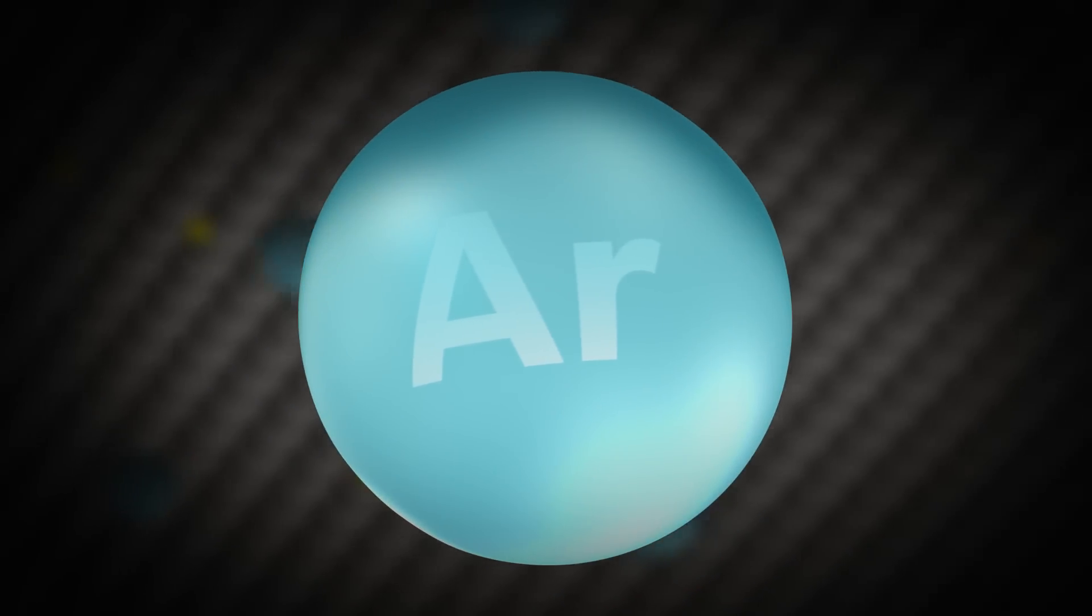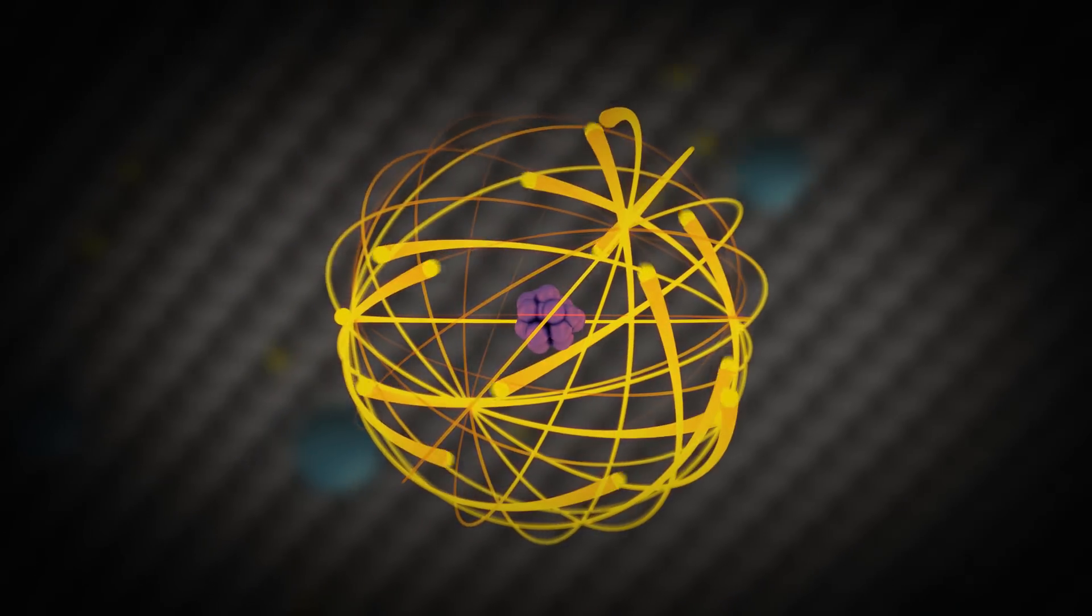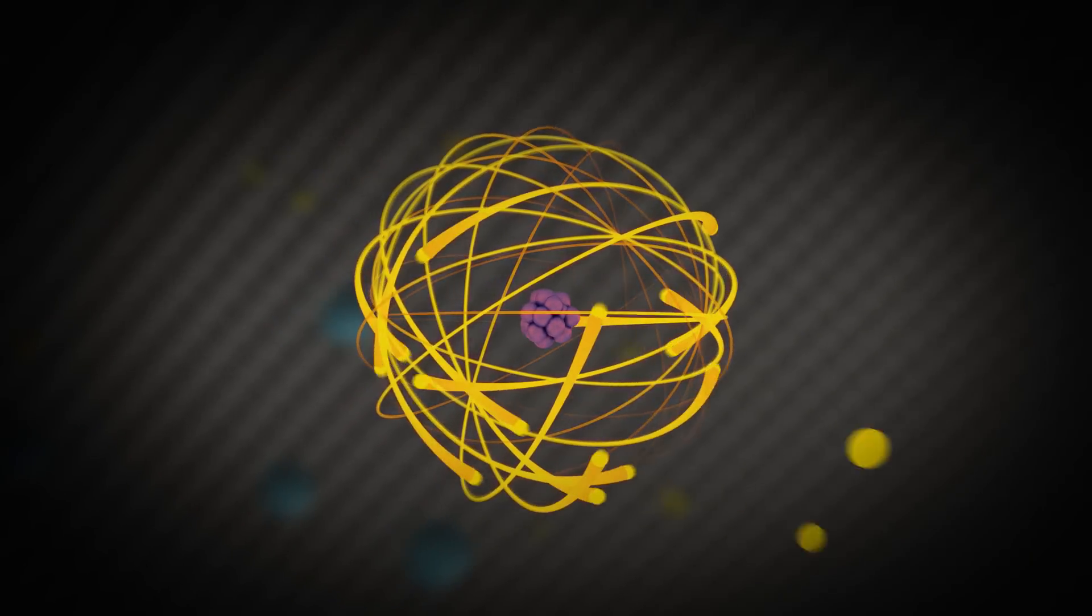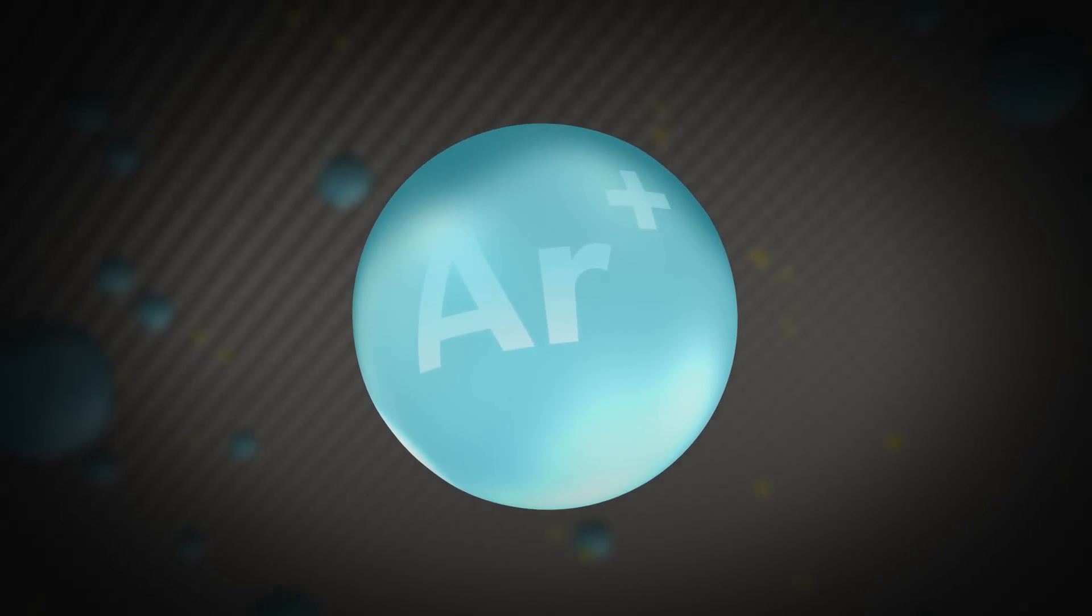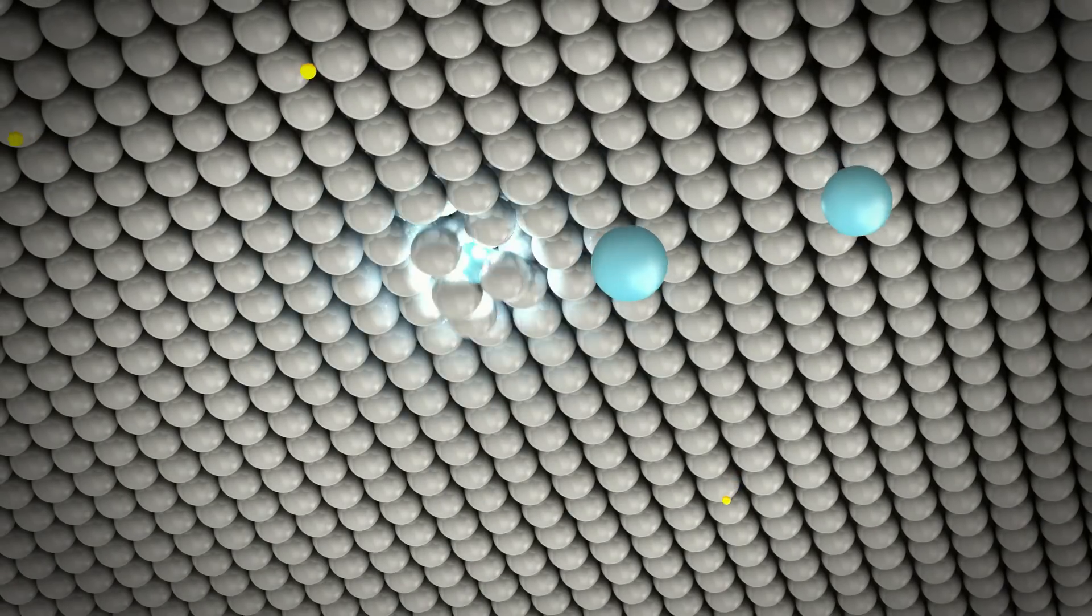The positively charged argon ions are continuously generated by electrons hitting the argon atoms. The sputtering target is negatively charged. Therefore, the argon ions are attracted towards its surface.